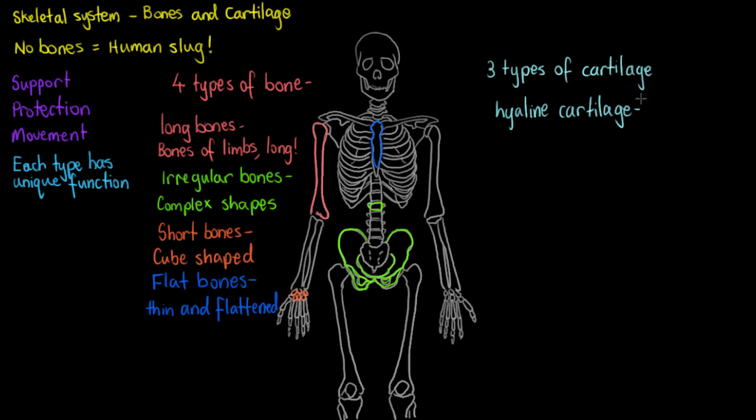The first type of cartilage in the body is hyaline. Hyaline cartilage is the most abundant type of cartilage in the body. We can find it in our nose, in our ribs where the ribs connect onto the sternum, and also in our joints. An important function of hyaline cartilage is articulation of the joints and allowing smooth movement of the body and the bones.